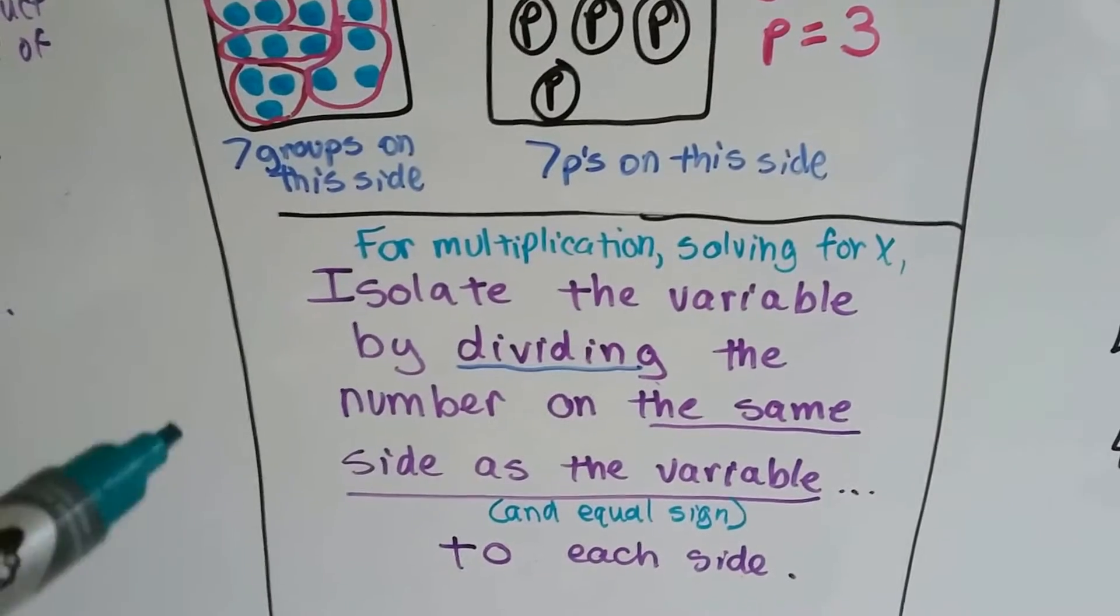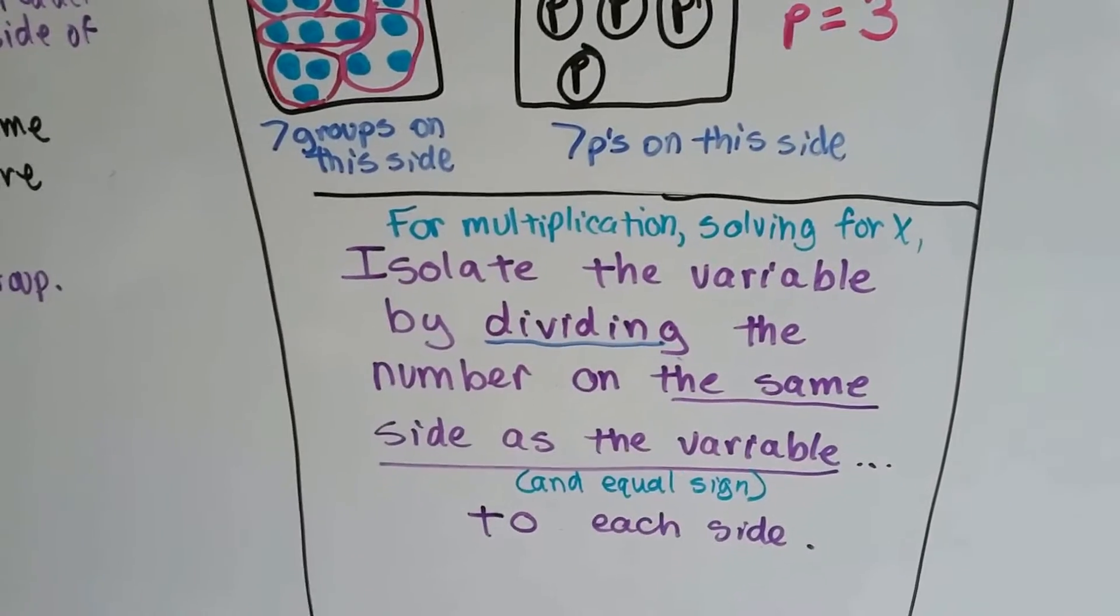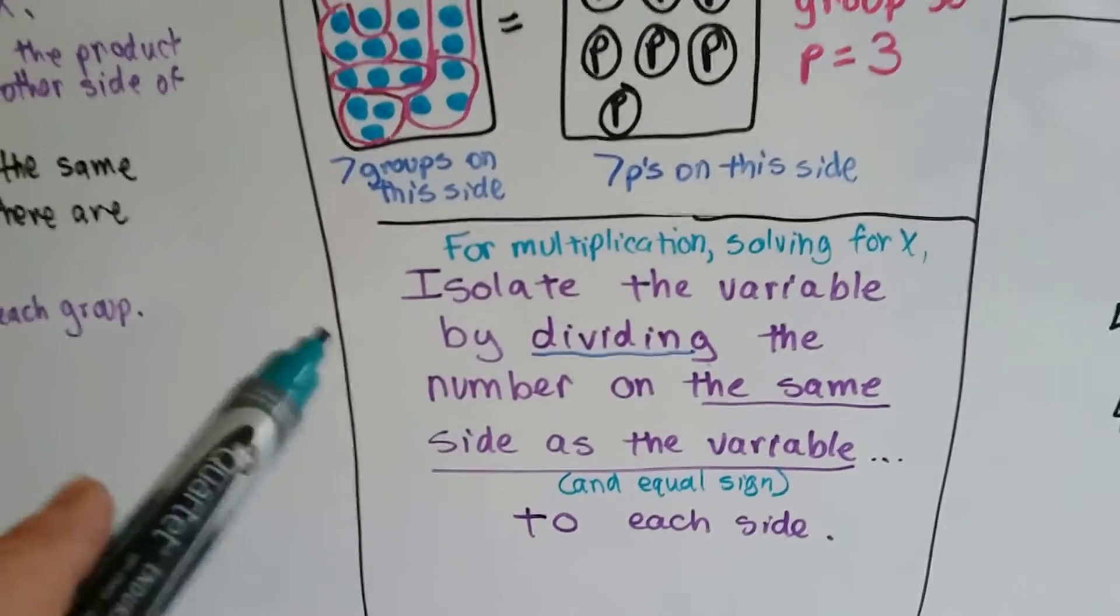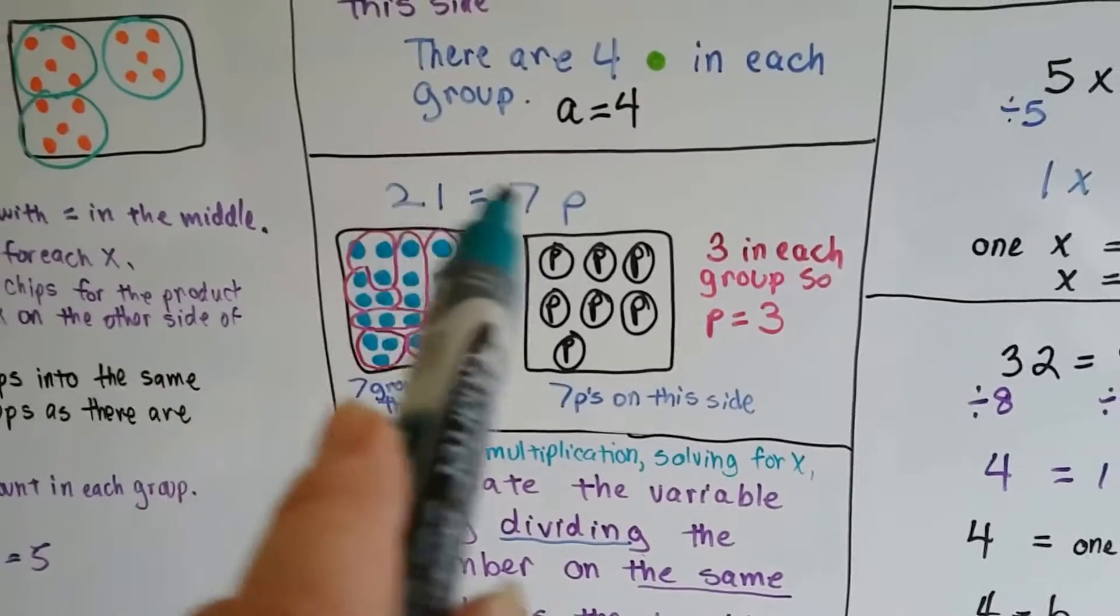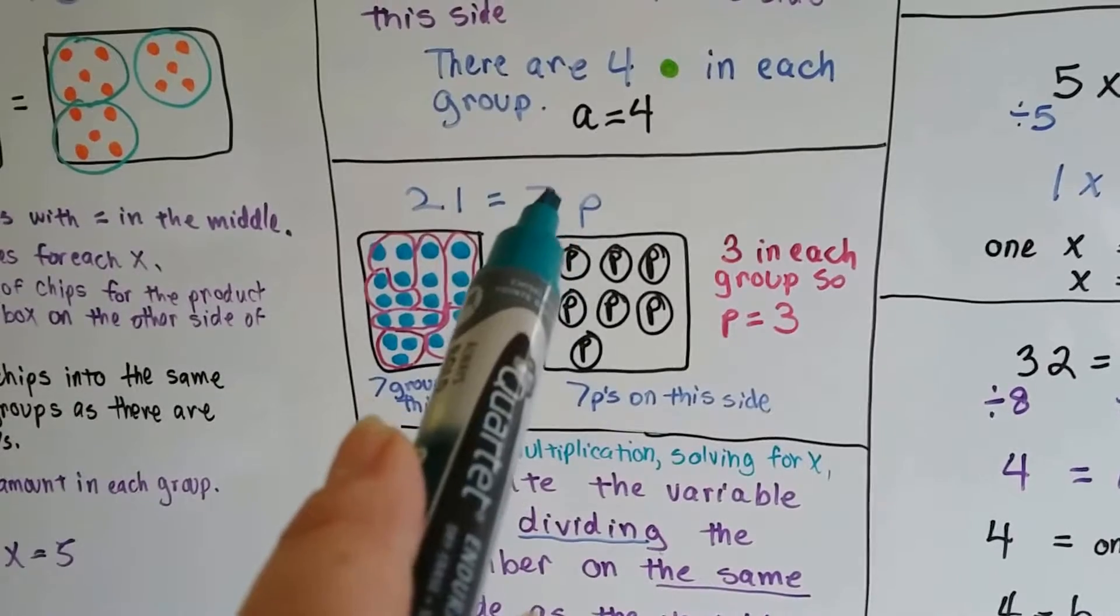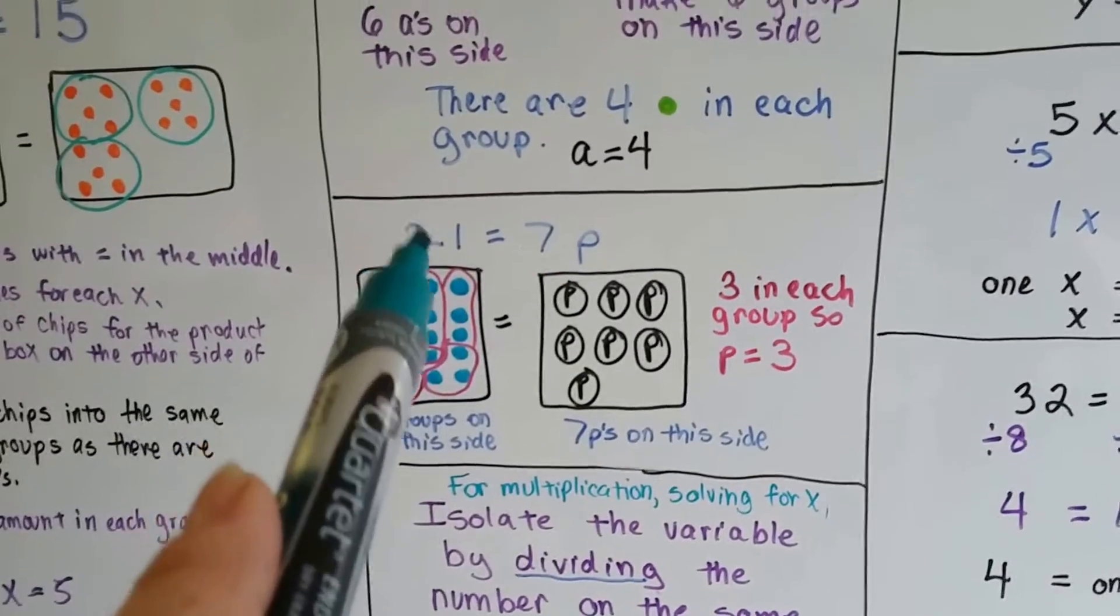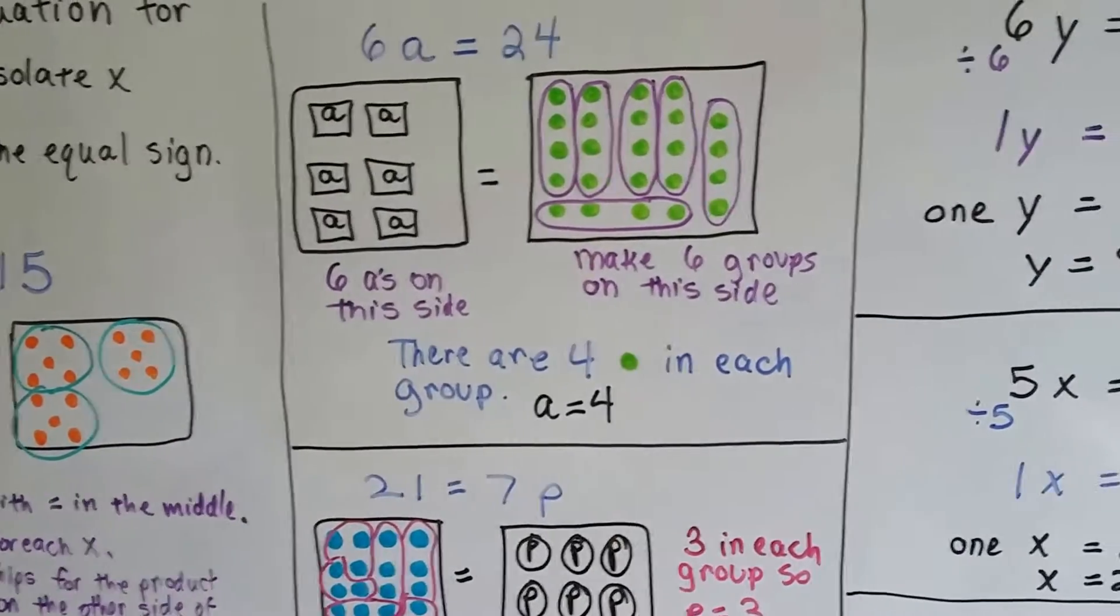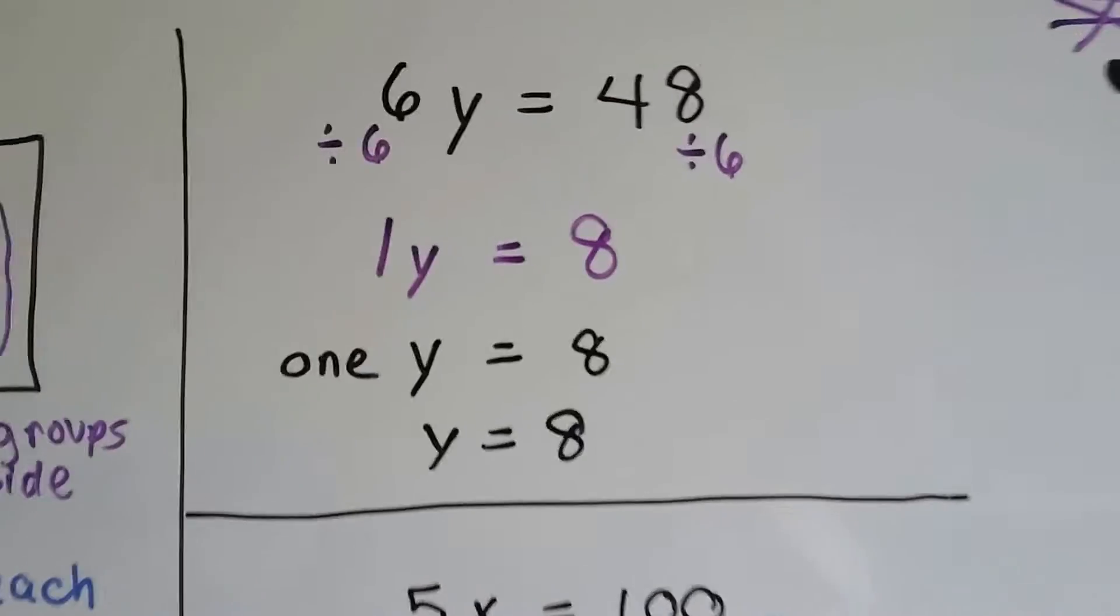So remember, for multiplication, when we're solving for x, to isolate the variable, we divide the same number on the side of the variable as the other side of the equal sign. We would do 7 divided by 7, 21 divided by 7. We would do 6 divided by 6, and 24 divided by 6. So that's what we're going to do here. So instead of drawing our little dots, we're just going to do math.